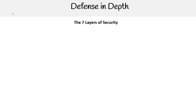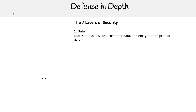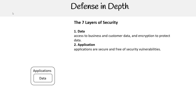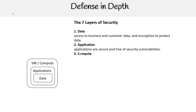Let's work our way through inside out. At the core we have data — so access to business and customer data and encryption to protect our data. Then we have applications: applications should be secure and free of security vulnerabilities. Then you have compute: access to VMs and ports, both on-premise and cloud.